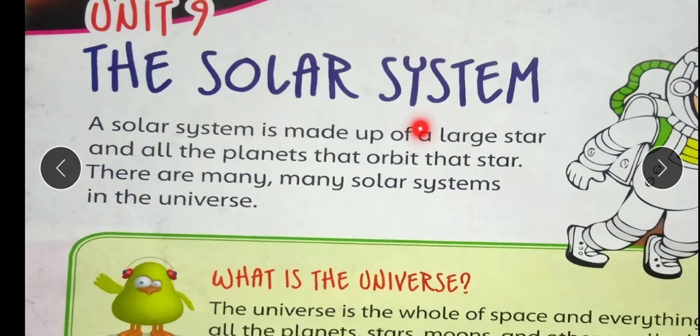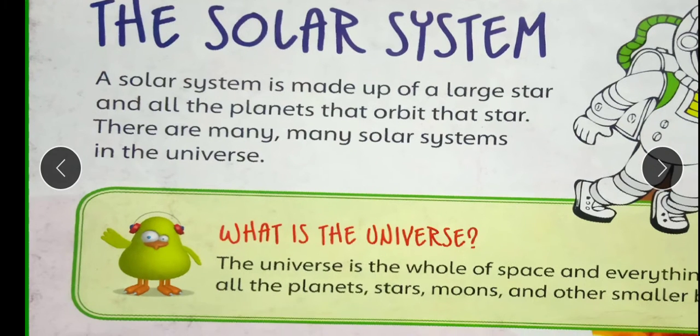The solar system. A solar system is made up of a large star and all the planets that orbit that star. Ek solar system ek bade sitare aur in tamam planet se milkar banta hai jo ke is sitare ke gird ghoomte hain. There are many, many solar systems in the universe. Yahan par bahut bahut jyada solar system hai universe mein.